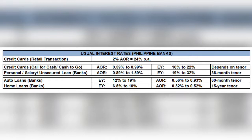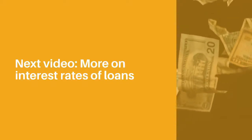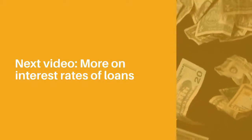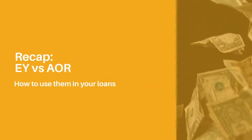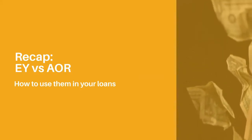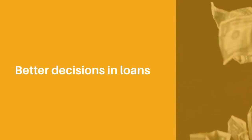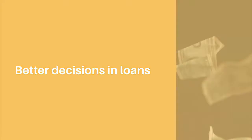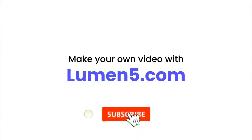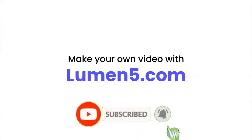Before we end, here's a summary of the usual interest rates charged by banks for different loans. In a separate video, we will discuss further how much interest we actually pay per different loans. I hope with this video I was able to shed some light on EY and AOR, how to use them in your loans, and how you can consider them in your future loan decisions. Once again, don't forget to subscribe to our YouTube channel and click that notification bell. See you next time.